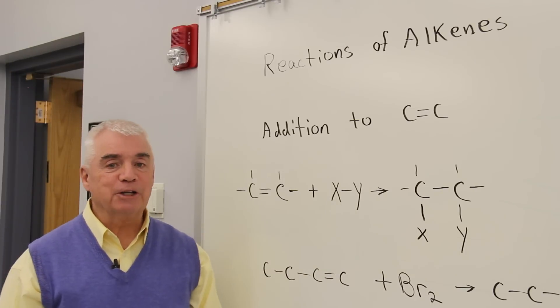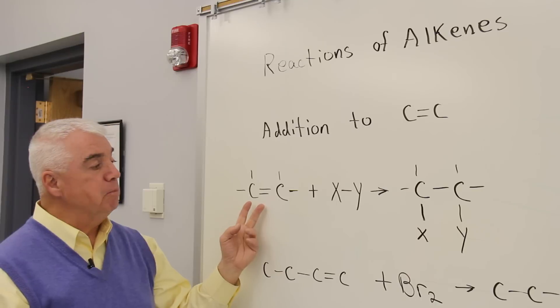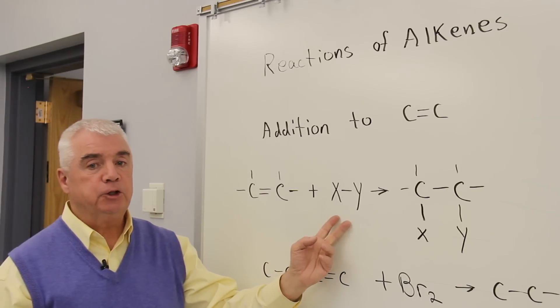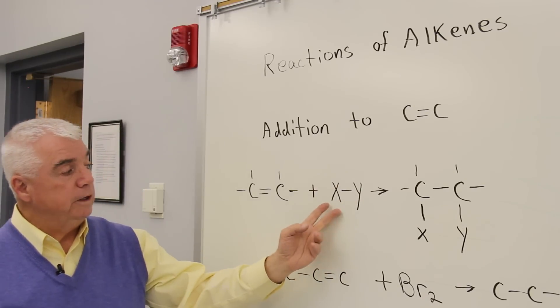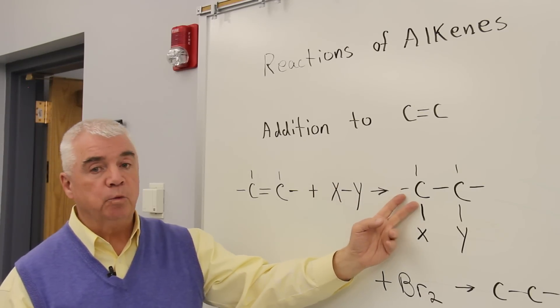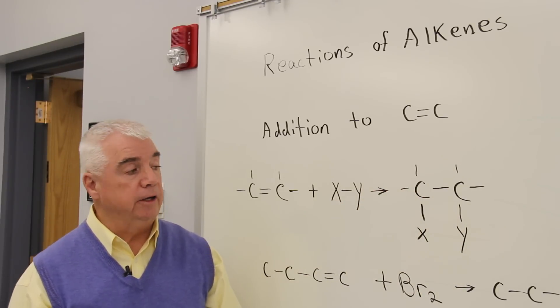The most common reaction is one that we call an addition, where a compound with a double bond reacts with a reagent that has two parts, and one half of this reagent will add to one of the carbons of the double bond, the other half of the reagent to the other side.